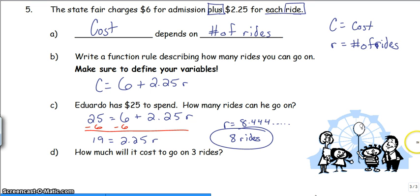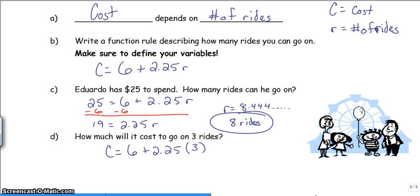Part D, how much will it cost to go on three rides? Now I know how many rides I'm going on, I can figure out how much money I need to bring. The cost is $6 plus $2.25 times those three rides that I want to go on. I go ahead and I solve. So knowing everything I know, knowing that I want to go on three rides, I need to make sure I have $12.75. I may ask for $15, see if I can get a churro or something at the state fair. But $12.75 will at least get me in and get me on three rides.